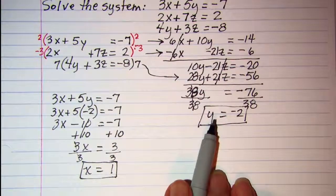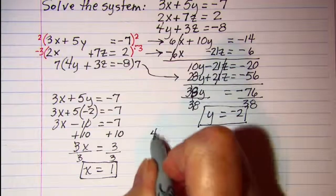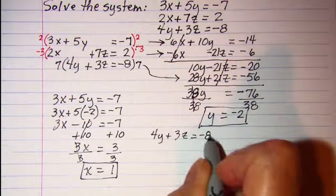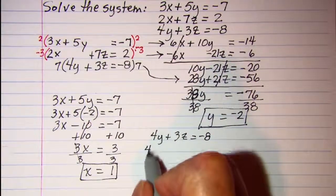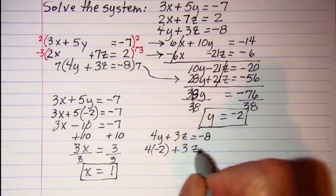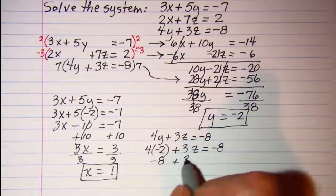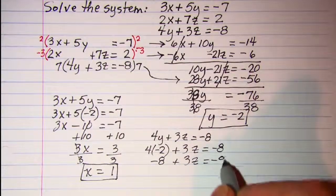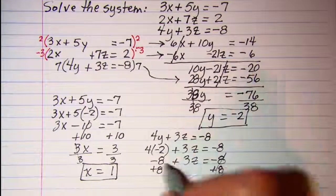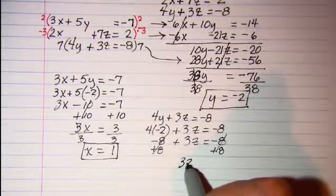I still need z. Let me put it into this equation: 4y + 3z = -8. 4(-2) + 3z = -8, so -8 + 3z = -8. Add 8 to both sides: 3z = 0. Now our final step is to write these solutions in an ordered triple.